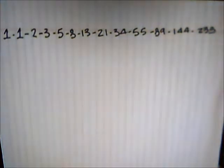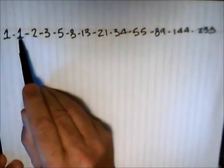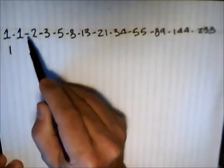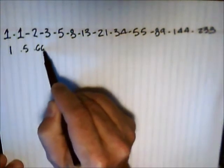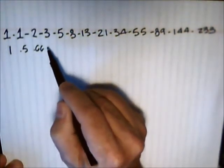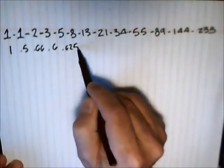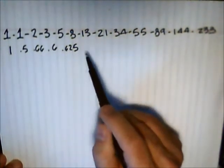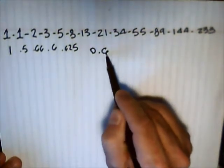Now, why is this number important? We'll get to that — you're going to see the coolest things if you stay with me. If I take this number and divide it by the next number: one divided by one is one, one divided by two is 0.5, two divided by three is 0.66, three divided by five is 0.6, five divided by eight is 0.625. These numbers will asymptotically approach an absolute value of 0.618.